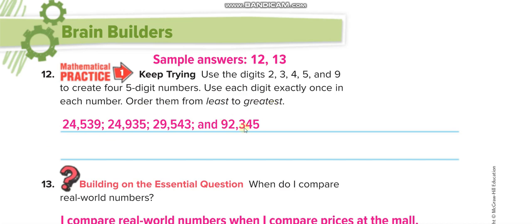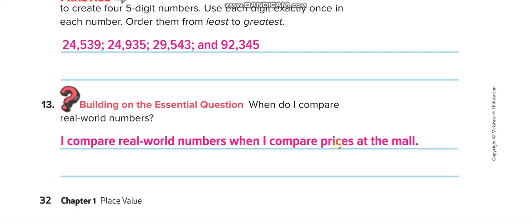After creating your numbers, order them from least to greatest. We compare real-world numbers when comparing prices at the mall or doing real-life calculations — there are many other places where you compare real-world numbers. I hope you understand the lesson. Don't forget to finish your homework, pages 33 and 34, and send it to me through Pioneer or by email — I'll mention my email in the description. If you have any questions, ask in the comment box. Thank you so much, don't forget to subscribe to 'Learn Math with Mr. Saad.' Have a nice day!